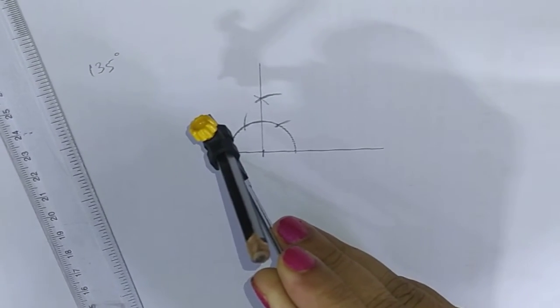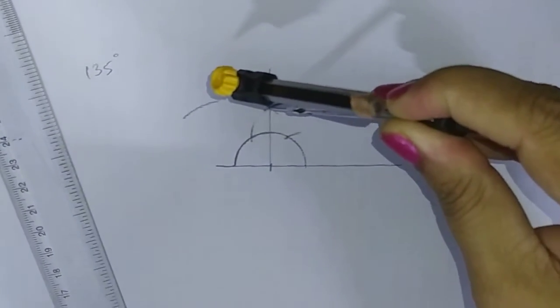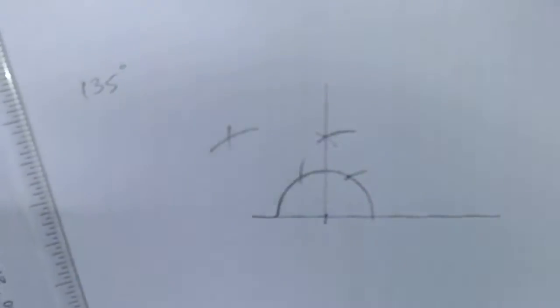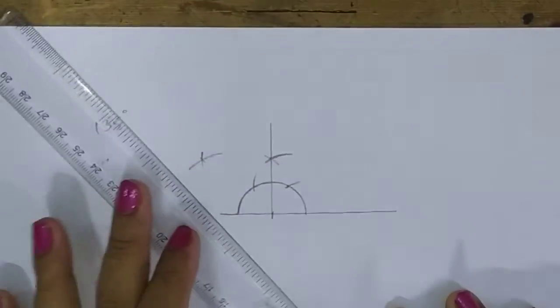For bisecting, we again need to bisect the opposite side of 90, that is also 90. If we bisect this here, we get 45.